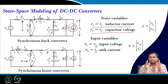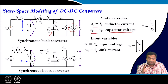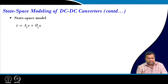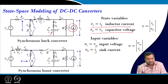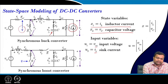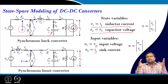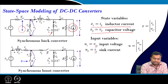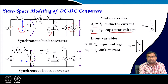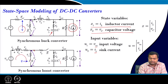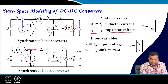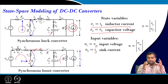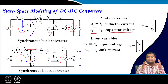We want to first derive the state space model for different switch configurations and get the complete solution. If you take the state space model of a DC-DC converter: if this switch is on, this path will be on and this path will be off, giving one set of configuration. Similarly, for this converter if this switch is on it will be connected and this path will be disconnected, giving two separate systems. Depending upon the switch configuration you will get two different state space equations, and this kind of system is called a switched linear system.